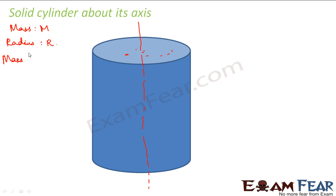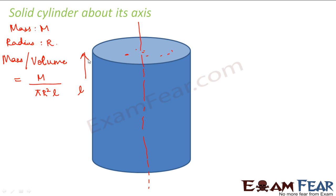What is the mass per unit volume of the cylinder? In case of a rod we considered mass per unit length. In case of the circular plate, since it was two-dimensional, we considered mass per unit area. In case of a cylinder, since it is three-dimensional, we consider mass per unit volume. So mass per unit volume is m divided by pi r squared l, where l is the length of the cylinder. So pi r squared l is the volume of the cylinder.